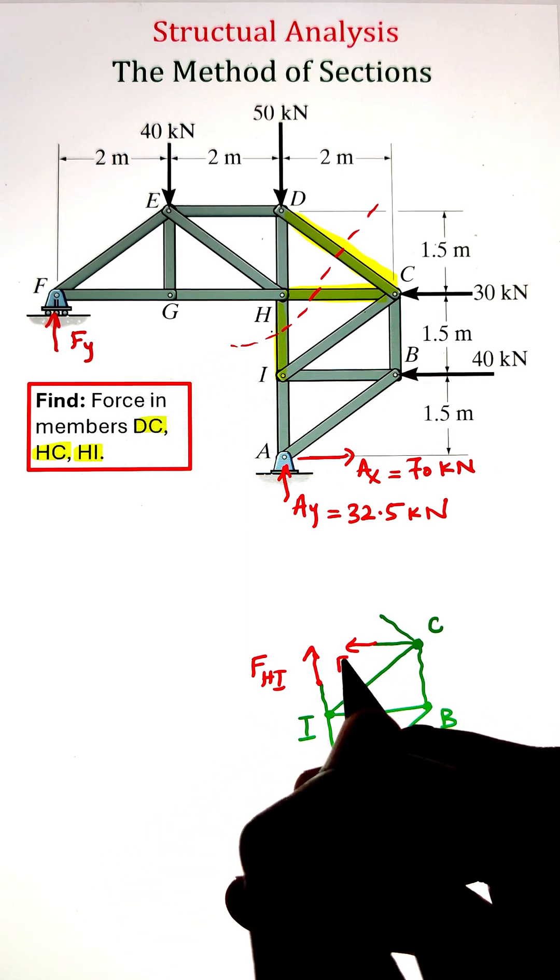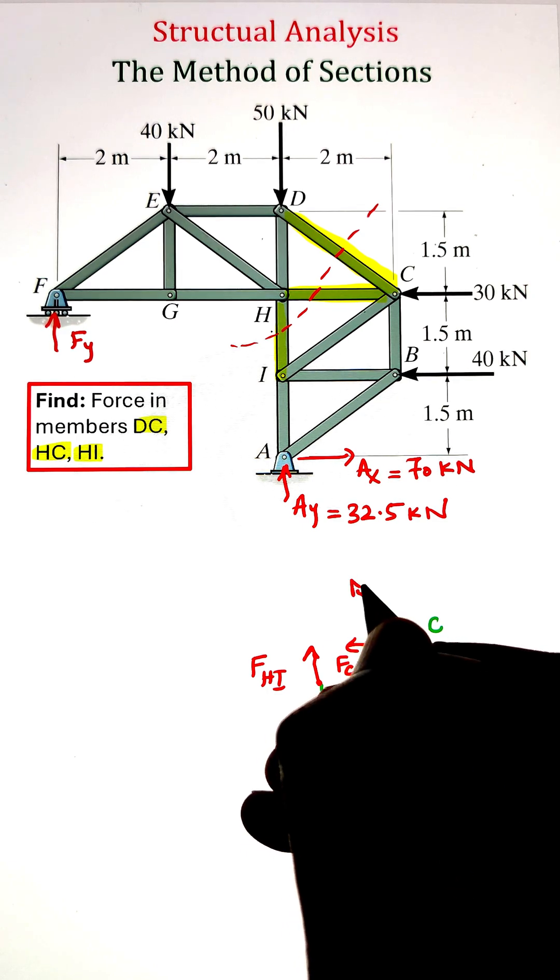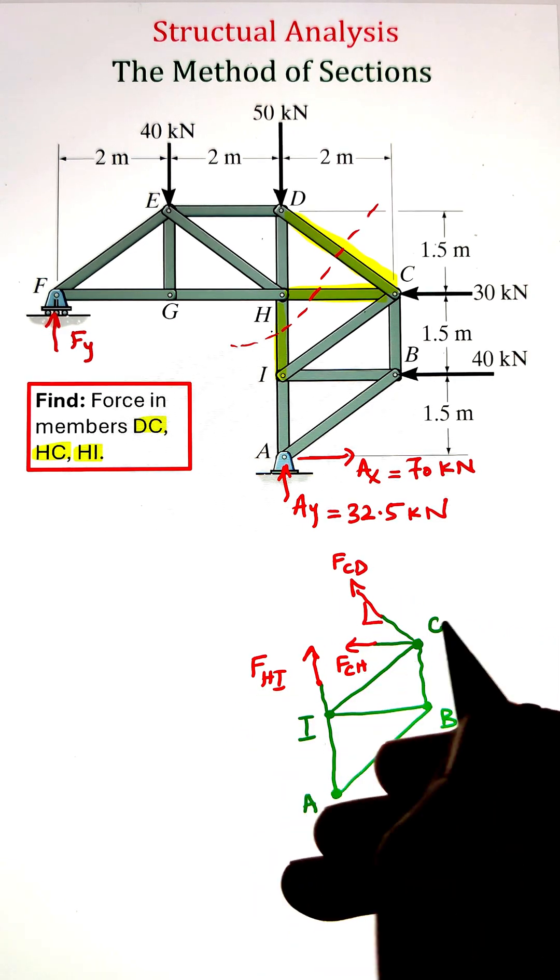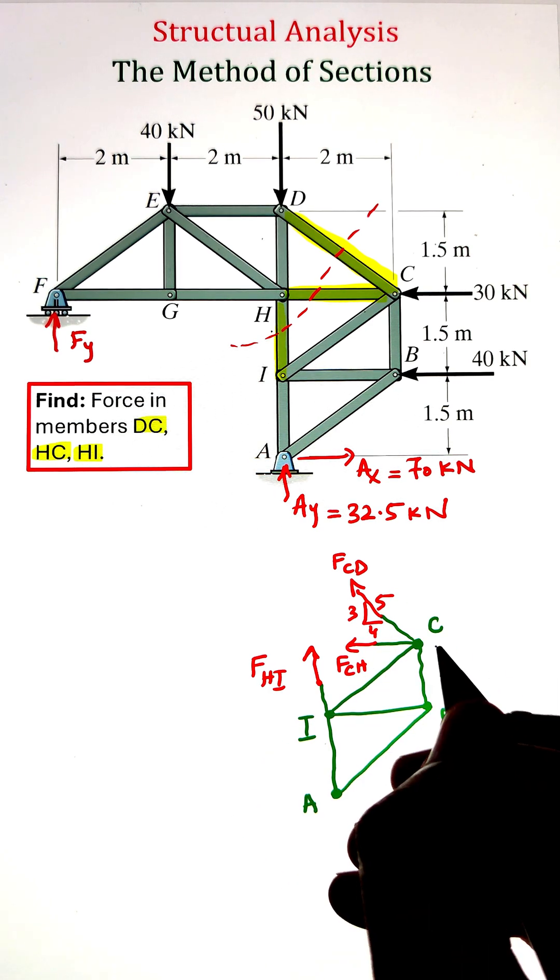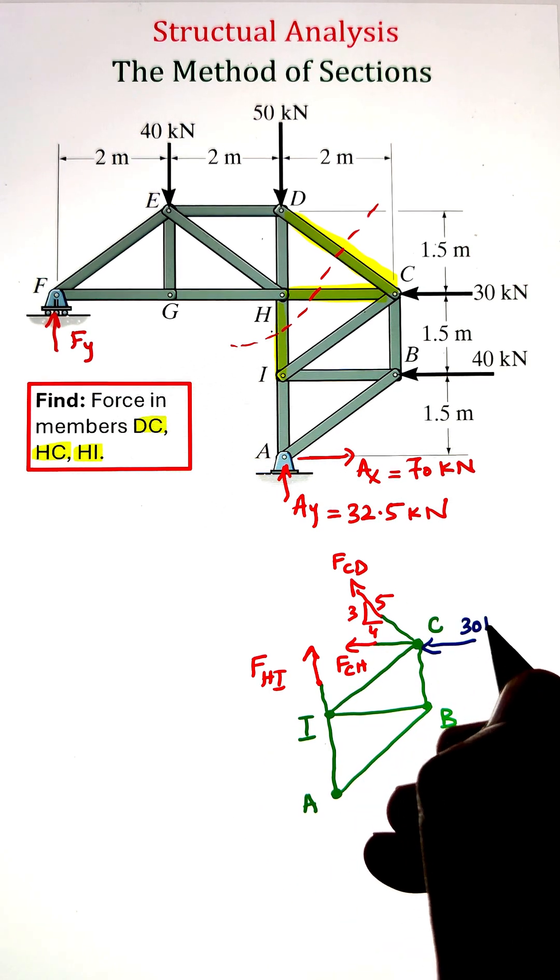We can also identify the direction of force in member CD from the right angle triangle that has a ratio of 3-4-5. Other than the internal forces, we have a couple of external loads applied at point C and at point B, and we have the support reactions at point A.